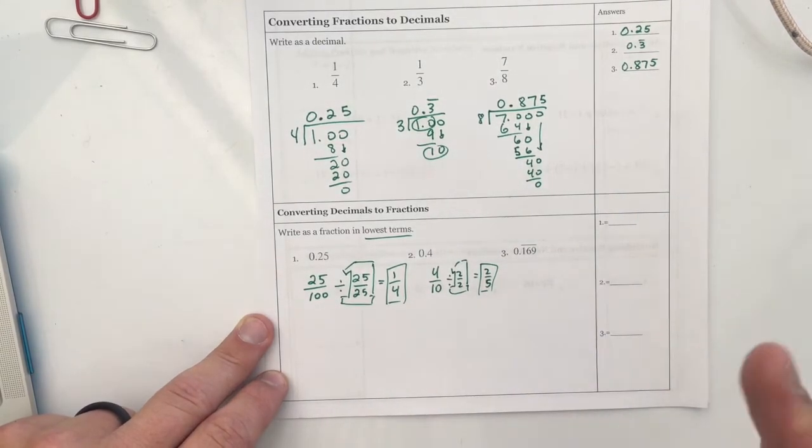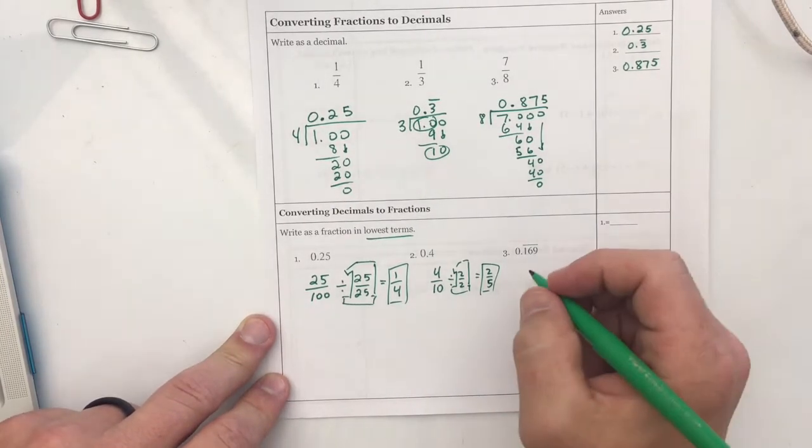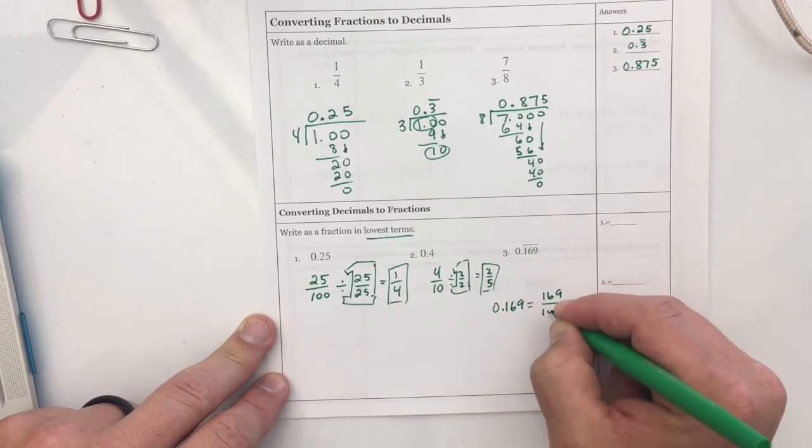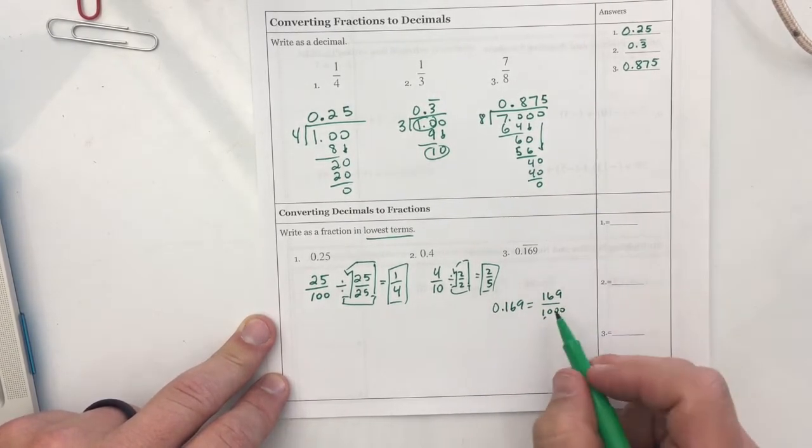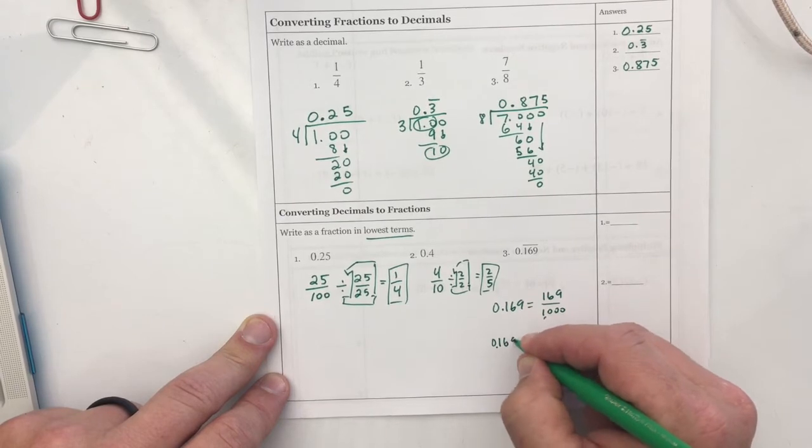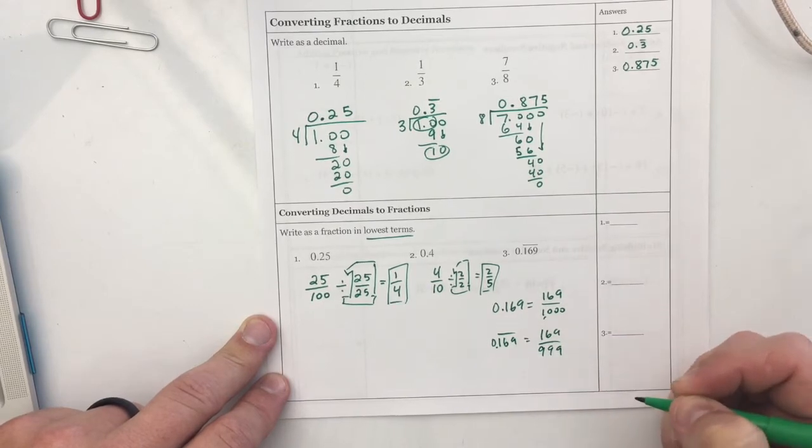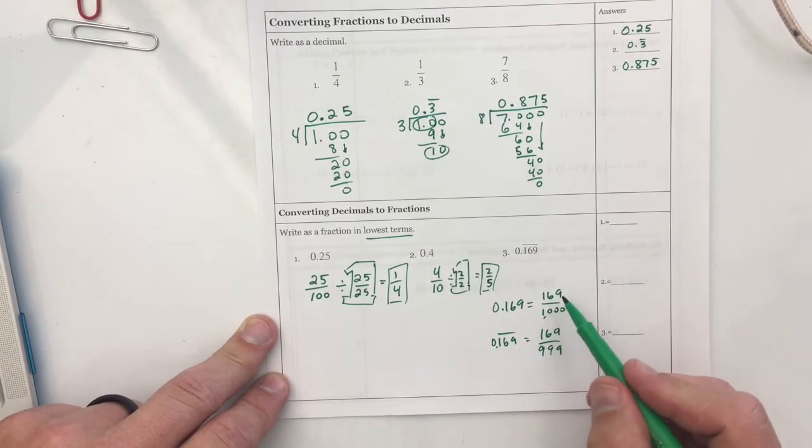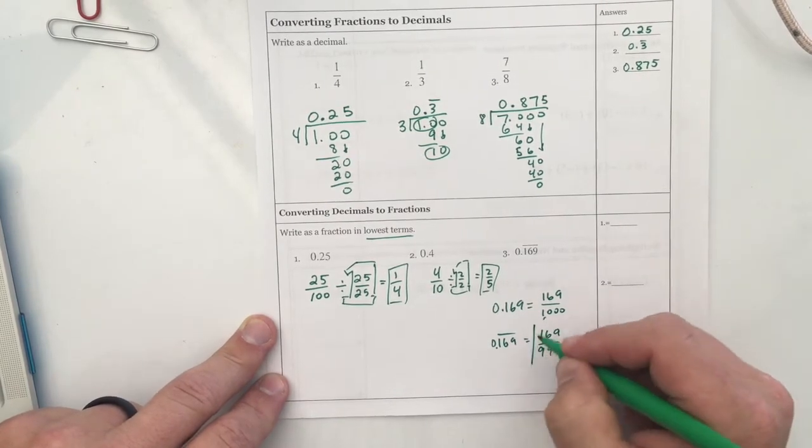If you were paying attention up here, you would have known that one-fourth is equal to point two five. Over here we have four-tenths, because the four is in the tenths place. We're going to divide by two over two, because both of those numbers are divisible by two, and we get two-fifths. Zero point one six nine, all of that repeating. You just kind of had to be paying attention in class. If this was not repeating, it would be one hundred and sixty-nine thousandths, because the nine is in the thousandths place. Because it does repeat, it should be very close to this. Zero point one six nine repeating is one hundred and sixty-nine over nine nine nine. Very similar numbers. These are very close to each other, so our fractions should be very close to each other. So make sure you didn't just put two nines or four nines or anything.